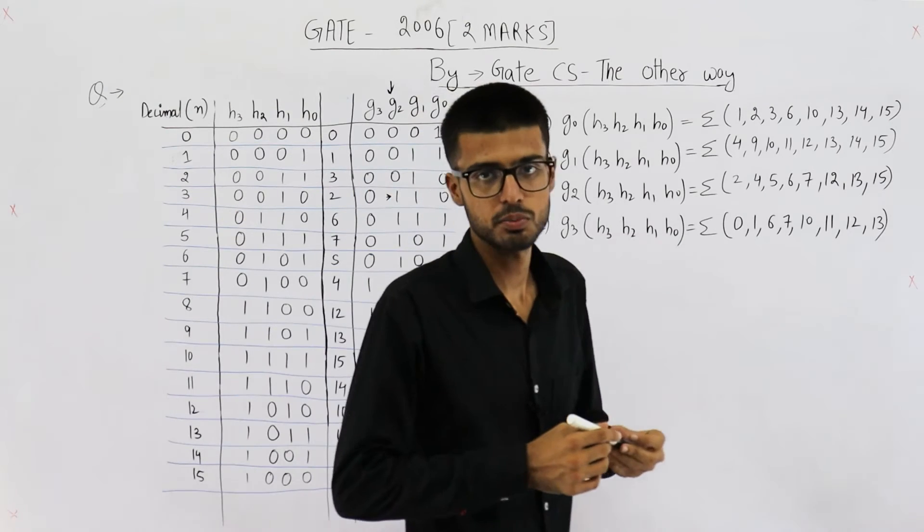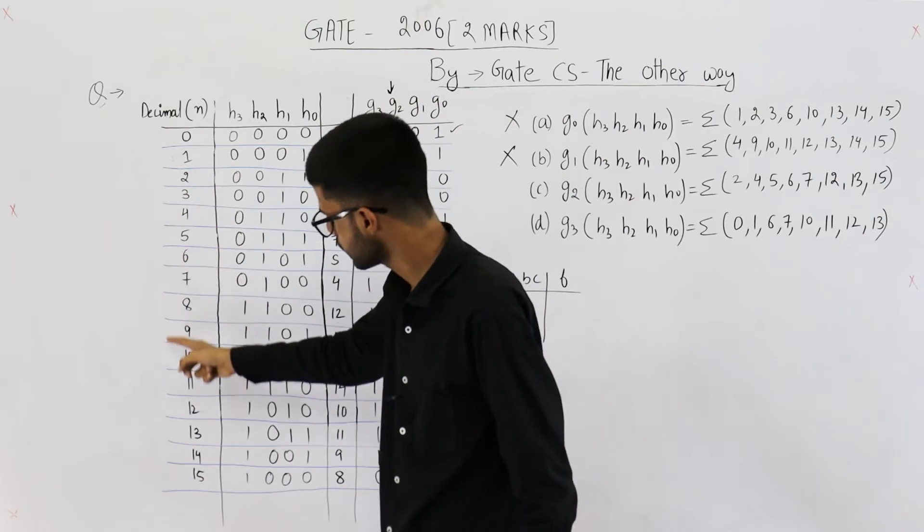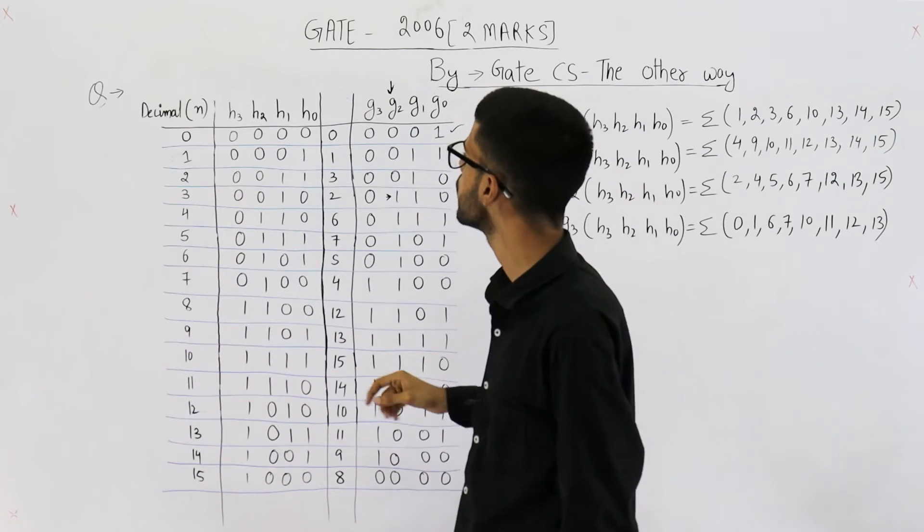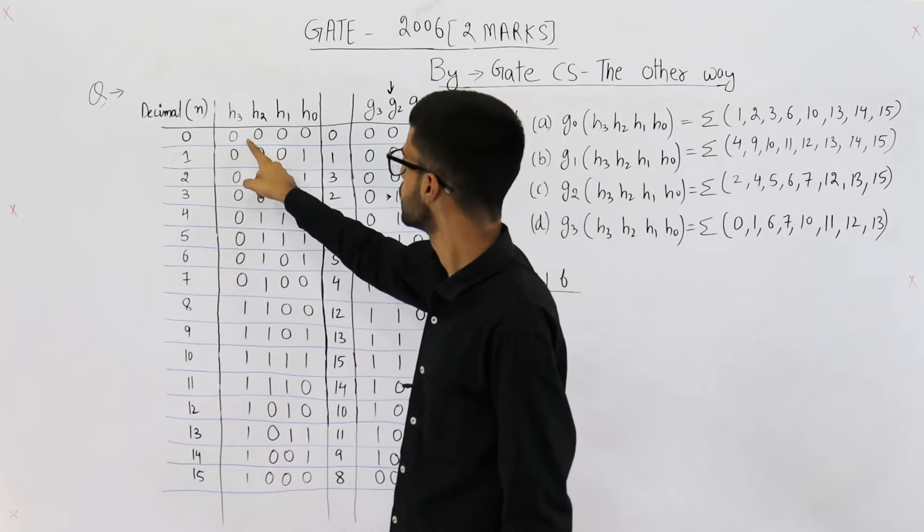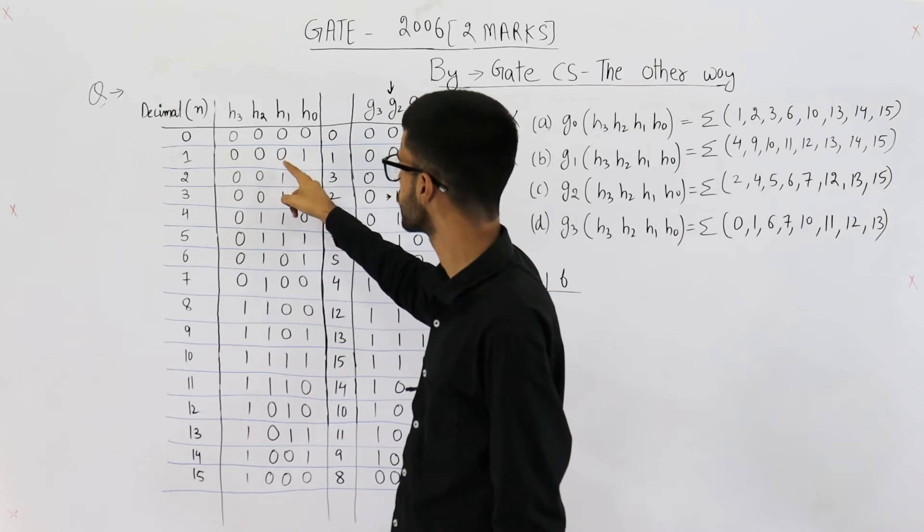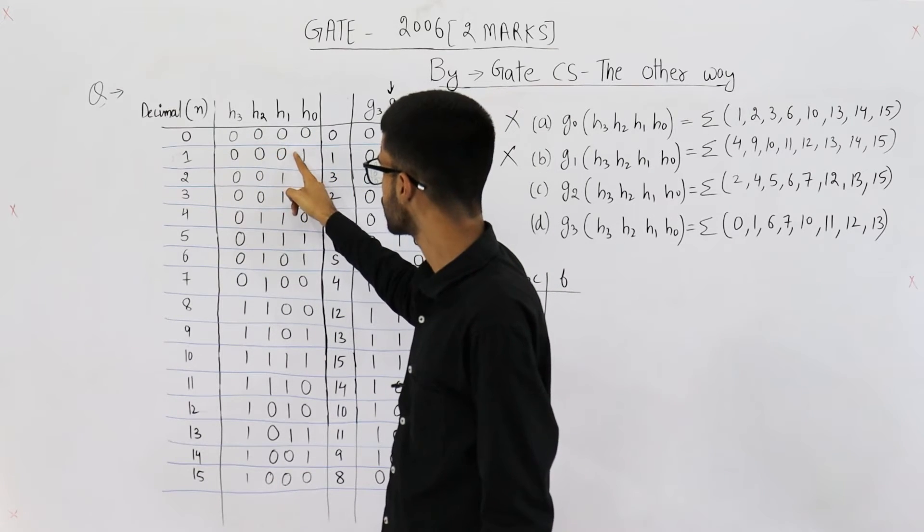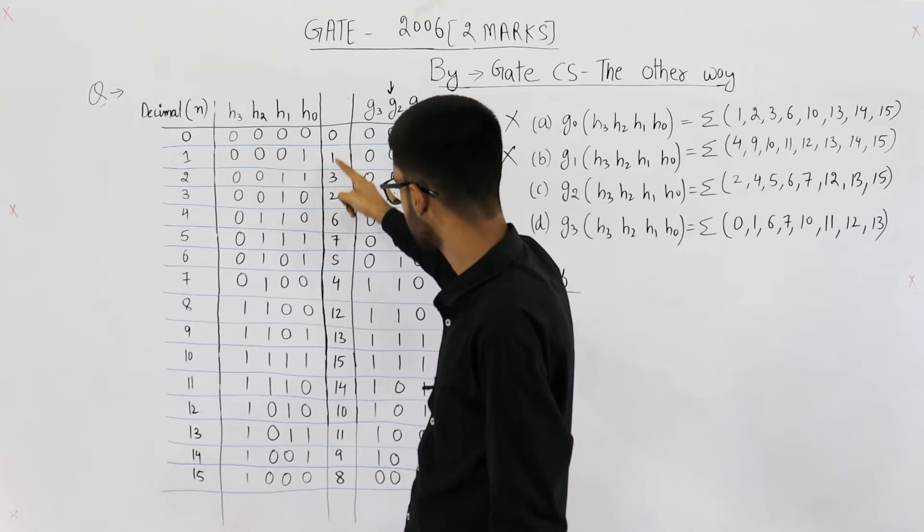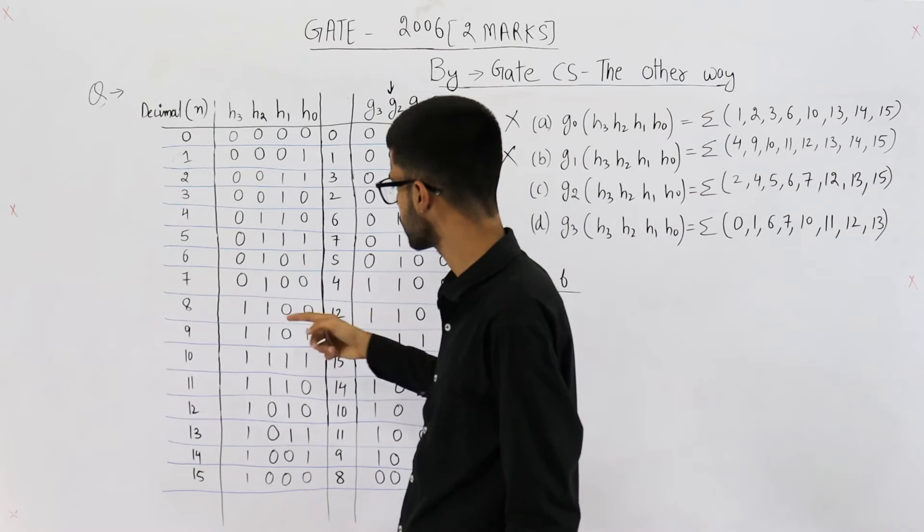Now mind it. Most of the students make a mistake here. They always concentrate on these binary values. No, they are not to be considered. Because see, these are the inputs. 0, 0, 0, 0. Then 0, 0, 0, 1, which is 1. But after 1, it is 0, 0, 1, 1. After 1, it is 3. So these are the values of inputs. Just see here.